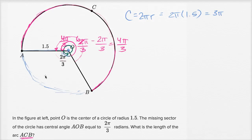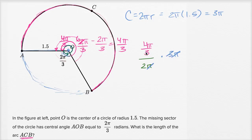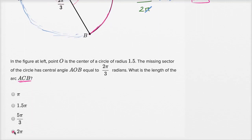Now what fraction is four pi over three of going all the way around the circle? This central angle is four pi over three; going all the way around is two pi. So four pi over three divided by two pi is the fraction of the entire circle that this arc represents. We multiply that times the entire circumference, times three pi. The pi divided by pi cancels, and the three cancels, leaving us with four pi over two, which equals two pi. So the length of arc ACB is two pi — it's exactly two-thirds of the entire circumference. Two pi, and we're done.